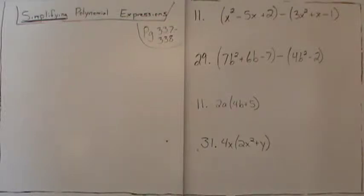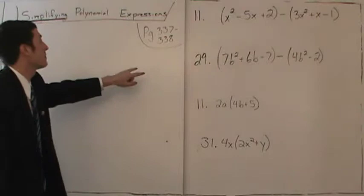Alright, welcome back. This is our fourth lesson on simplifying polynomial expressions, and today we'll be working on pages 337 to 338 of the textbook.